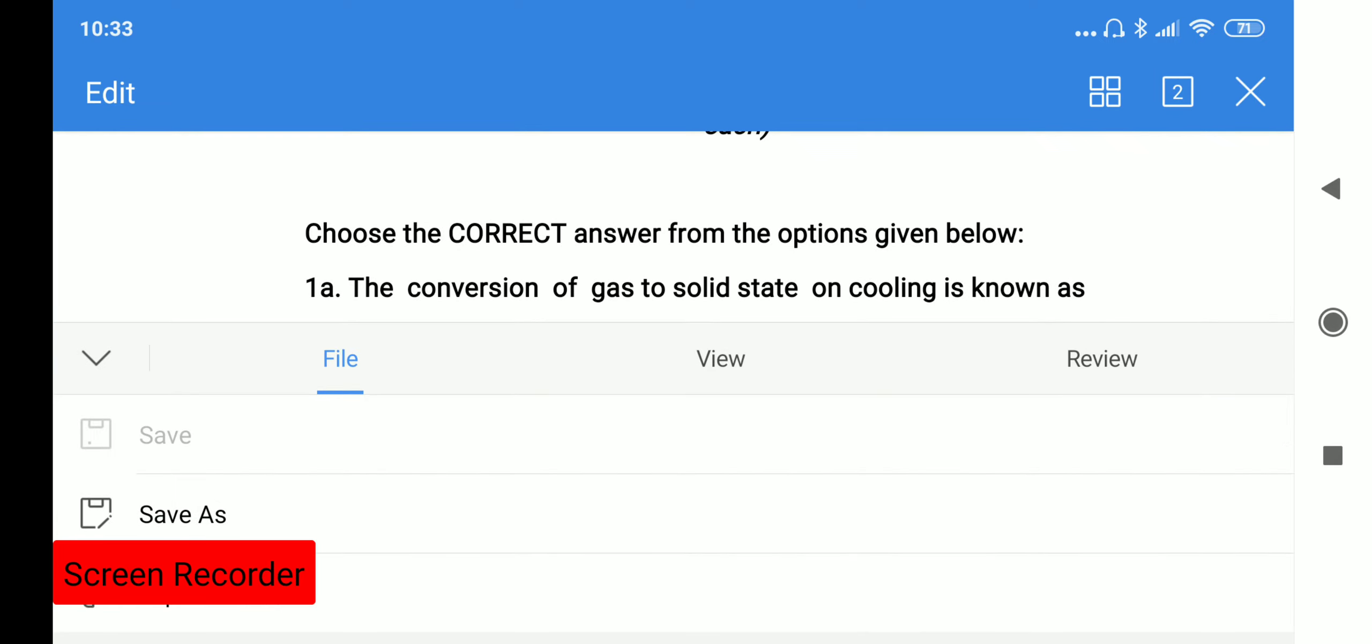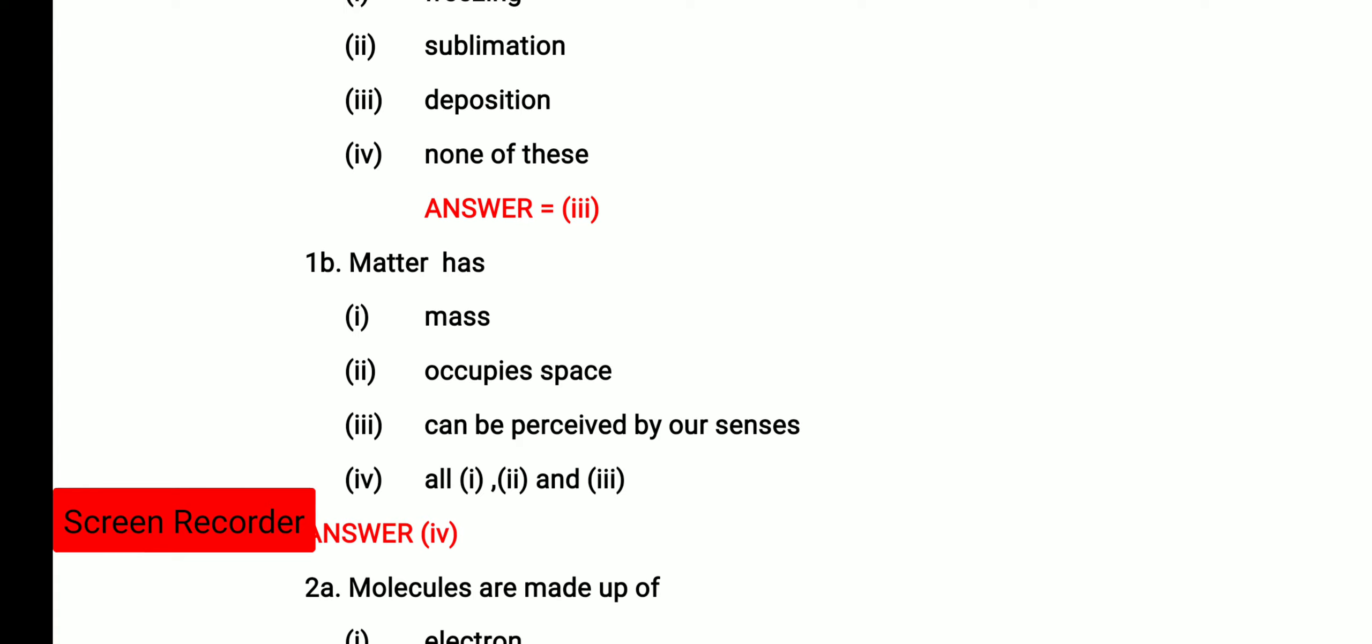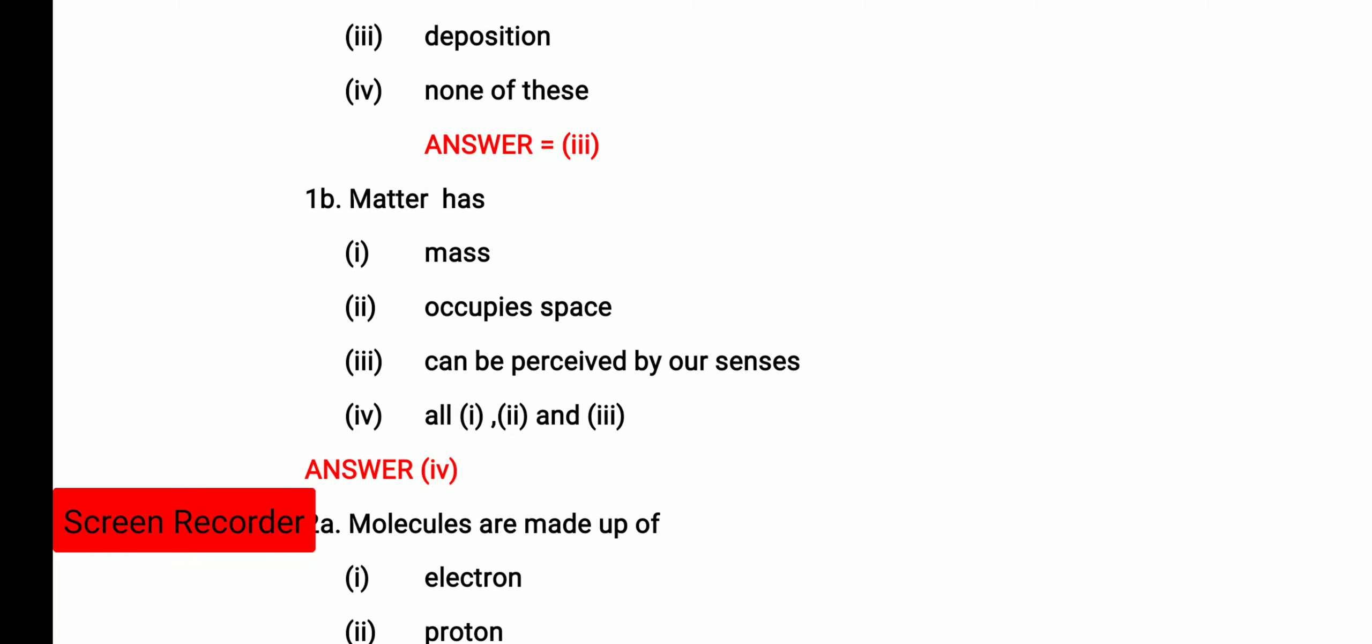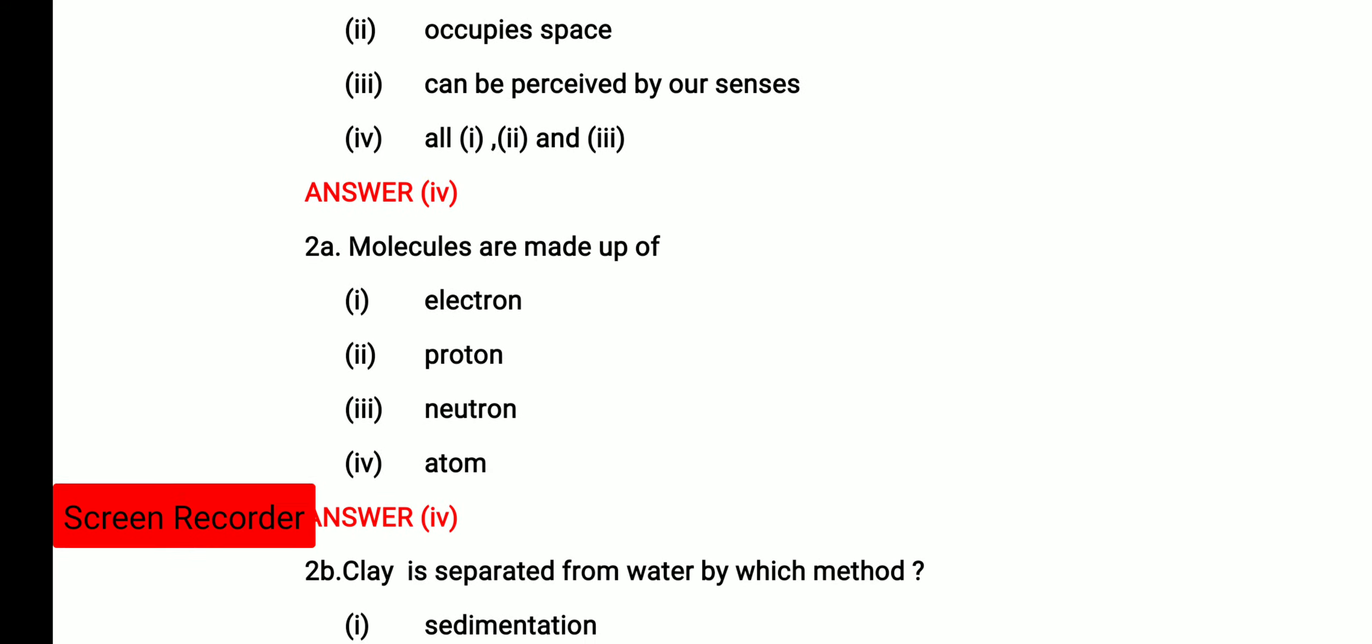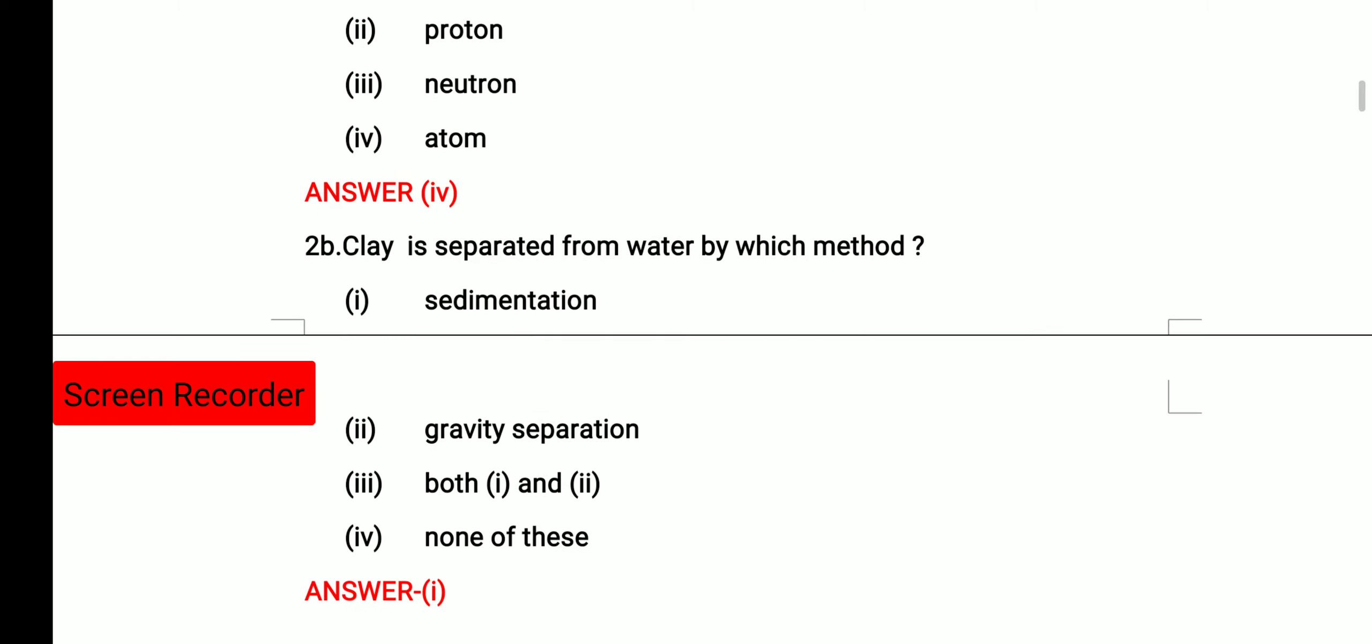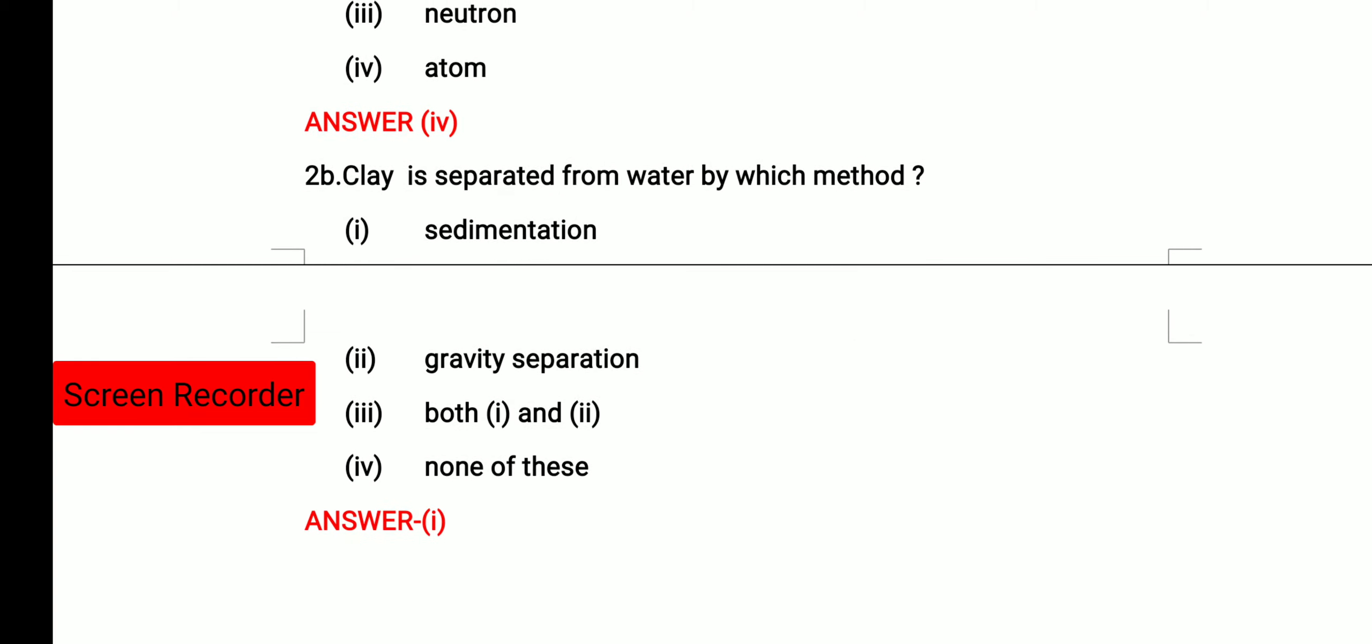Then the next question was matter has mass, it occupies the space and it can be perceived by our senses and fourth is all, so matter has all these three above mentioned properties. Answer option 4 is the correct answer. Then molecules are made up of atoms. Then the next question was clay is separated from water by which method. Answer option 1 is correct, that is sedimentation.